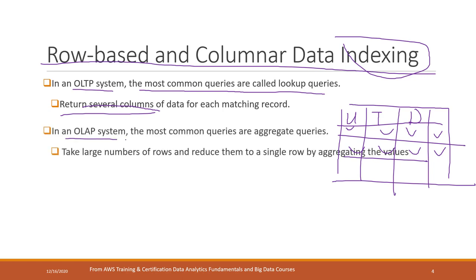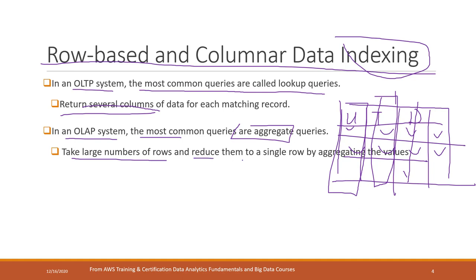For OLAP, the most common queries are aggregated queries. For example, we want to see the average transaction for different users across different time periods. That takes a large number of rows and reduces them into aggregated results — a sum or average across entire rows. In that case, column-based indexing is more suitable.